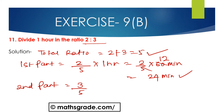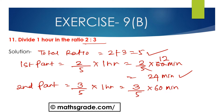Now the second part: 3 divided by 5 — the total ratio is 5 — multiplied with 1 hour, and 1 hour is 60 minutes. So 3 divided by 5 multiplied with 60 minutes. Cancelling 5 with 60, since 5 multiplied by 12 is 60, we multiply 3 by 12: 3 multiplied by 12 is 36 minutes. So we get 24 minutes and 36 minutes.